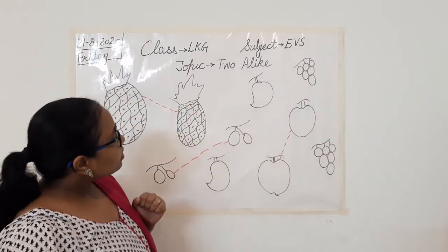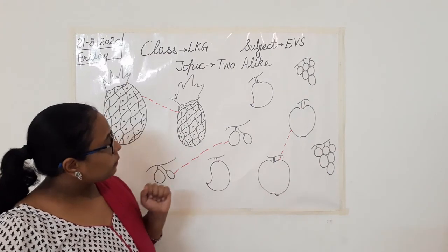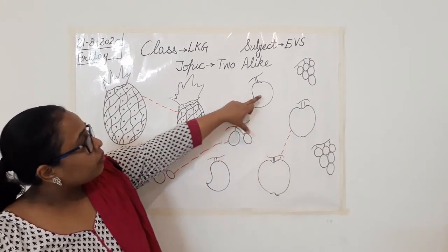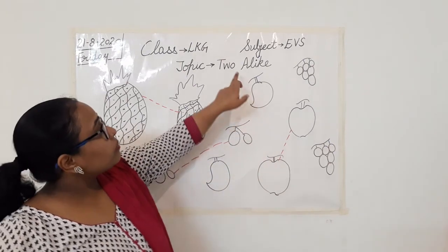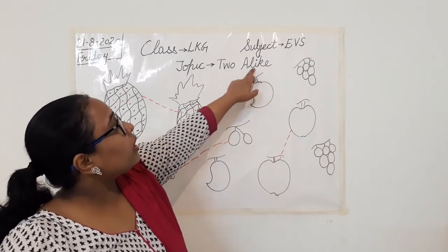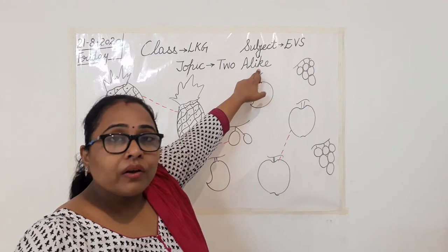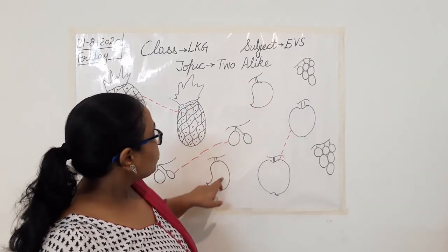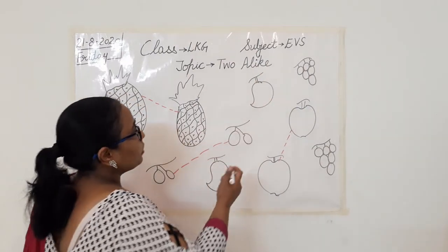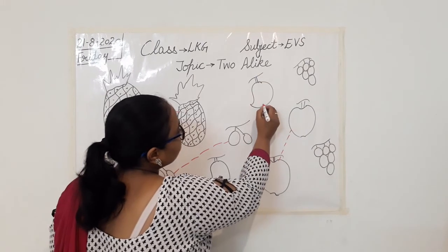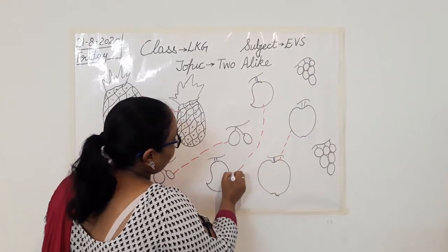So can you search for one more mango here? We have two mangoes and they both look alike. Alike means similar looking. So what are we going to do? We are going to join them — I am going to join these two mangoes and make a pair.